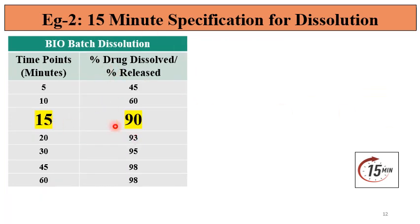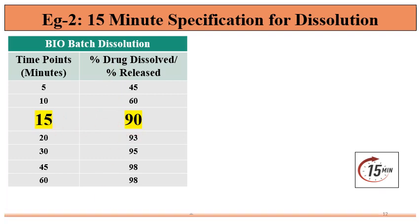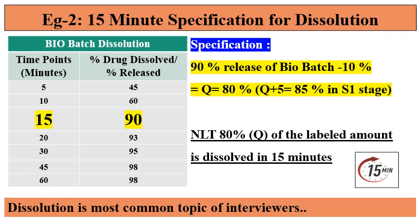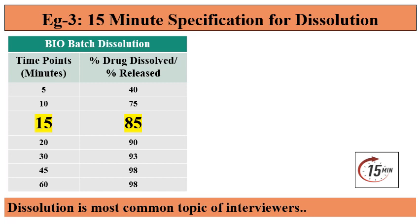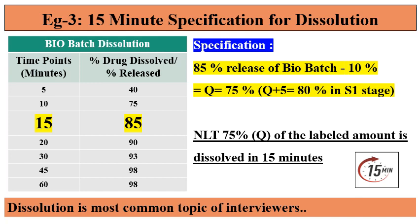Example 2: 90% release at 15 minutes. Applying the same formula, Q = 80%; Q plus 5 is 85% at S1 stage, and Q = 80% at S2 stage. Specification: not less than 80% of the labeled amount dissolved in 15 minutes. Example 3: 85% release at 15 minutes. Q becomes 75%; Q plus 5 is 80% at S1 stage. Specification: not less than 75% Q of the labeled amount dissolved in 15 minutes.